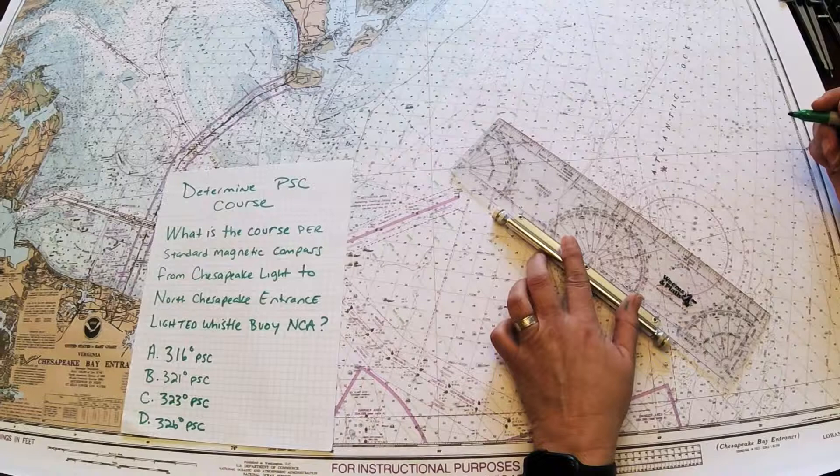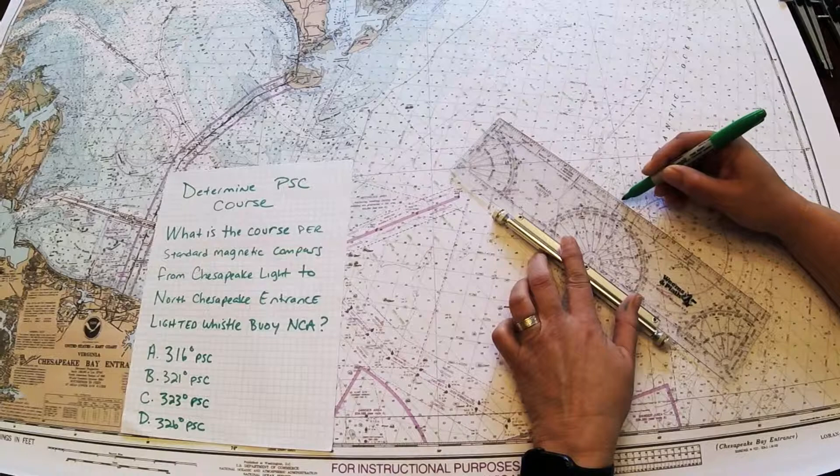And once I do that, I'm going to read it. I'll say it's right around 313 true, reading the outer ring 313 true.